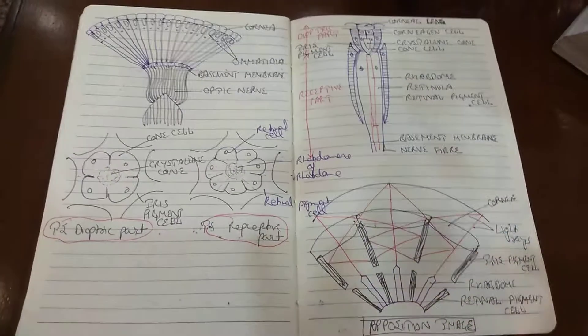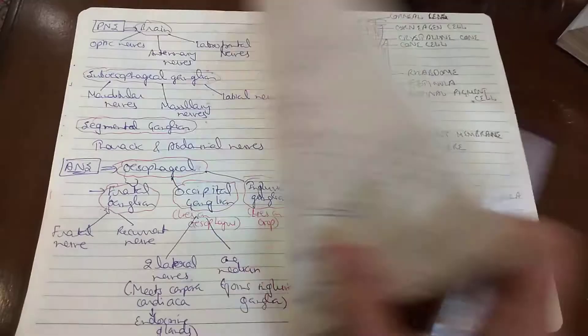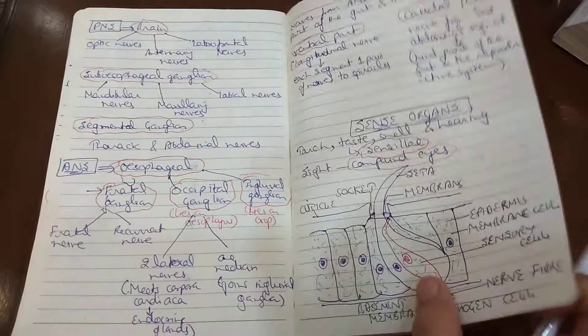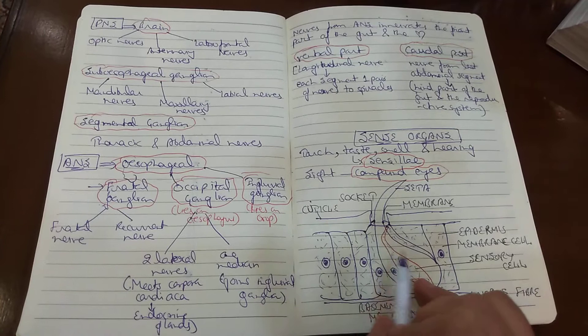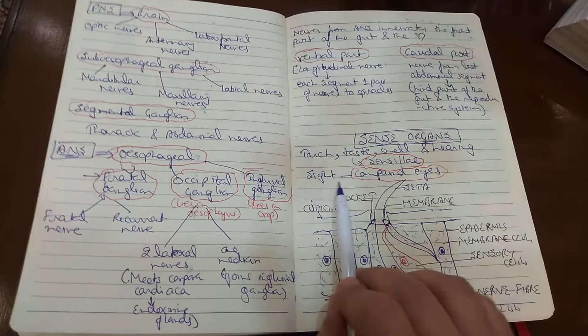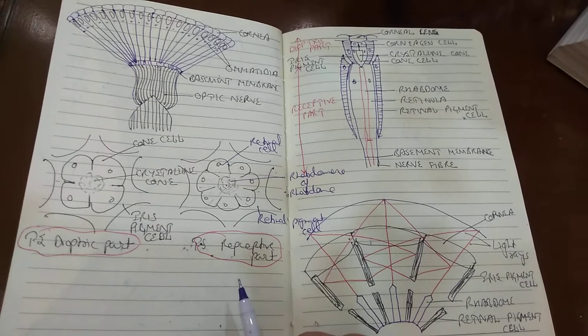Students, today we are going to study about the compound eyes. In the previous lecture we were studying about the sense organs, out of which I have already taught about the touch, taste, smell, and hearing senses, which are basically because of the sensilla. Now what we were left with was the sight organ — they are the pair of compound eyes, and these are kidney-shaped structures located dorsolaterally on the head.